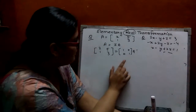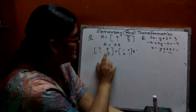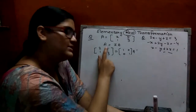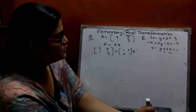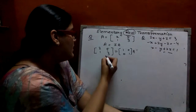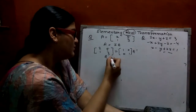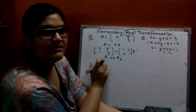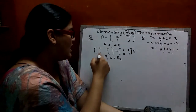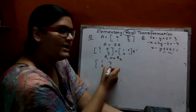You have to firstly make 1 here, then 0 here, then 1 here, then 0 here. Apply some row transformations. To make 1, we interchange R1 with R2. Means R2 becomes [1, 3] and R1 becomes [2, 5].